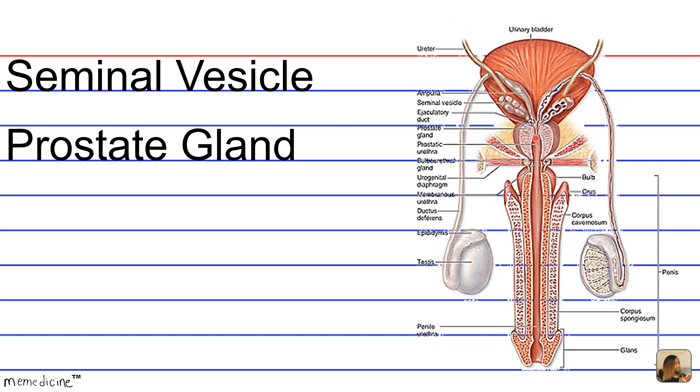Next we have the prostate gland pictured here, and it's a gland that surrounds the neck of the bladder. It released prostatic fluid, and this prostatic fluid is really alkaline,